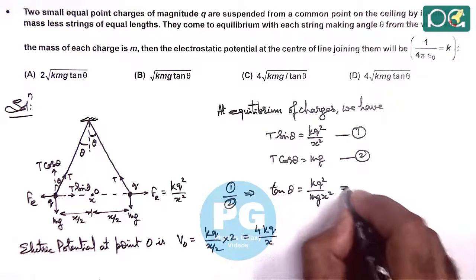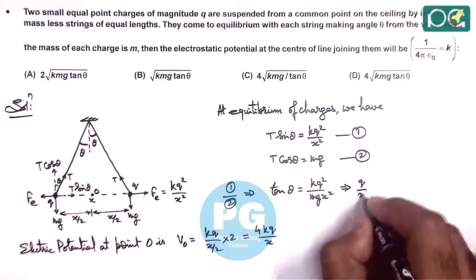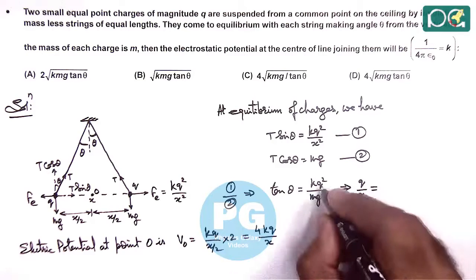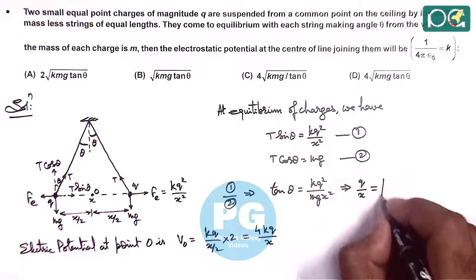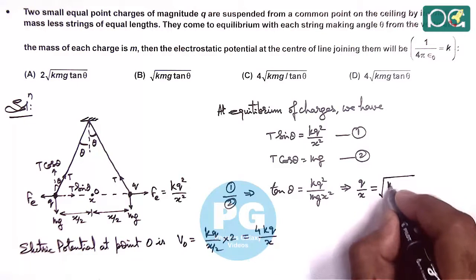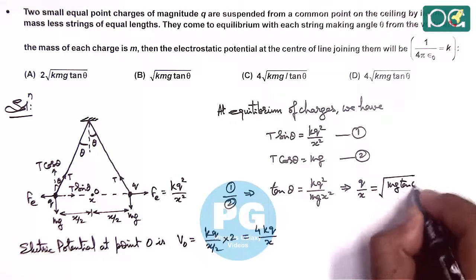From this relation, we can substitute the value of q by x here. We are getting q by x equals the square root of Mg tan theta by K.